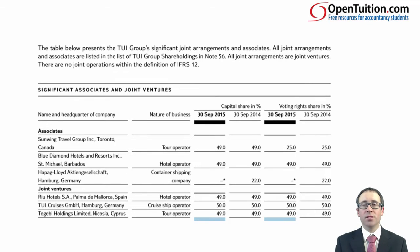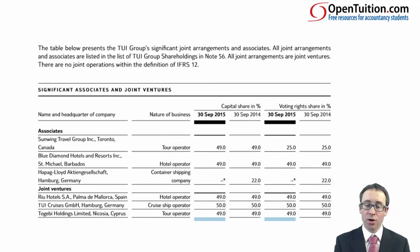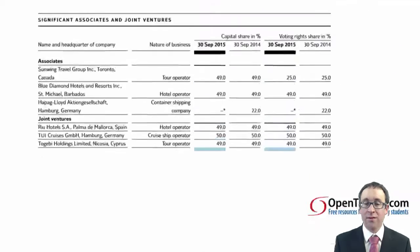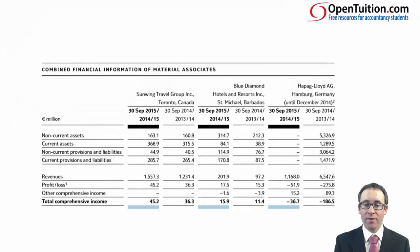Further extracts from the TUI group financial statements show who the significant associates and significant joint ventures are — three associates and three joint ventures — with the percentage ownership in each. It also gives combined financial information on material associates. Those material associates — Sunwing, Blue Diamond, and Hapag Lloyd — are given key information in terms of assets, liabilities, revenues, profits, and OCI.